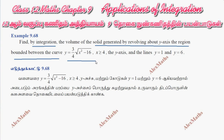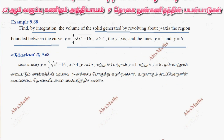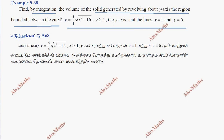We have x squared greater than or equal to 4. The y-axis and the lines y is equal to 1 and y is equal to 6. The curve is in standard form. Squaring on both sides gives y squared equal to 9 over 16.